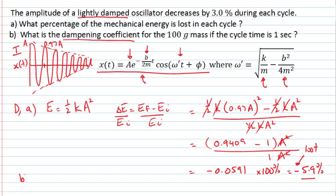The second part of my problem, part B, I'm asked to ascertain what is the dampening coefficient. What is the value for B if the mass that is oscillating is 100 grams and cycle time is one second? The way I can do this is to evaluate this expression here at T equals one second, realizing that I would have my amplitude A multiplied by e to the minus B times the time, which is one second, divided by two times the mass, which is 0.1, multiplied by one, multiplied by this cosine function.